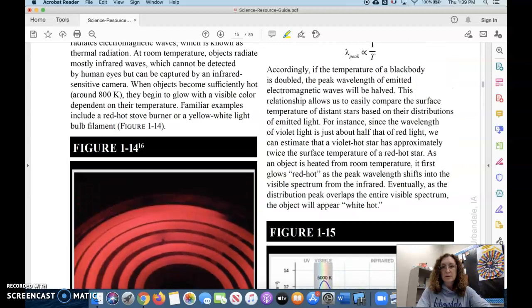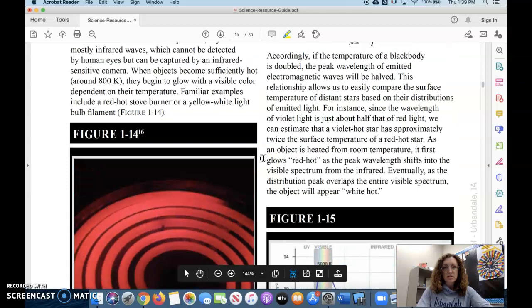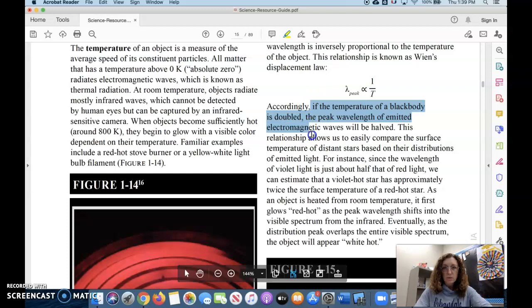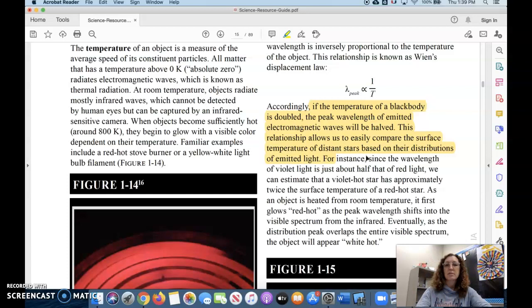We're going to talk just a moment really quickly about blackbody radiation. That term is right here. It's very difficult for me to describe blackbody radiation, but I want you to see it this way. If the temperature of a blackbody is doubled, the peak wavelength of emitted electromagnetic waves is halved. It gets cut in half.